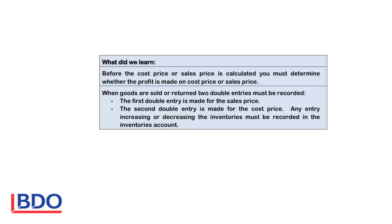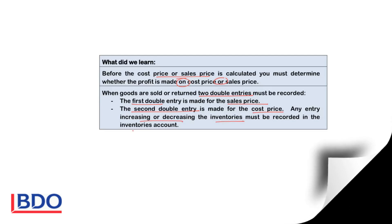What did we learn? Before the cost price or sales price is calculated, you must determine whether the profit was made on cost price or on sales price, so that you can use the correct calculation. When goods are sold or returned, two double entries will be recorded: the first at the sales price, where debtors or bank is debited and sales credited; the second at cost price, so that cost of sales and inventory will either increase or decrease. Any entry that will decrease or increase inventory must be recorded in the inventory account.